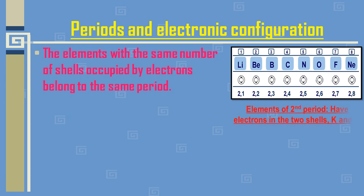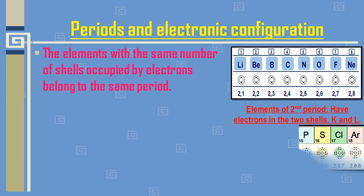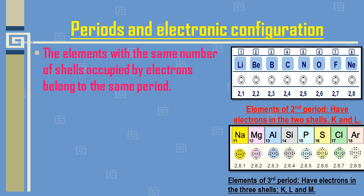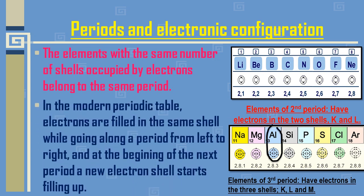The elements in the third period — sodium, magnesium, aluminium, silicon, phosphorus, sulfur, chlorine, and argon — have electrons in three shells: K, L, and M. Electrons are filled in the same shell while going along a period from left to right, and at the beginning of the next period a new electron shell starts filling up.